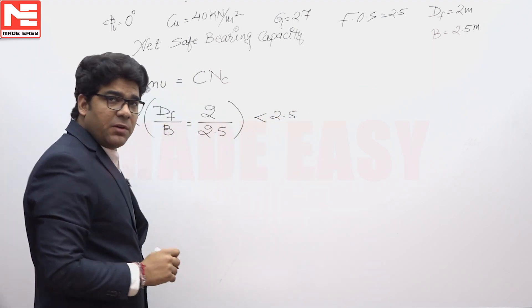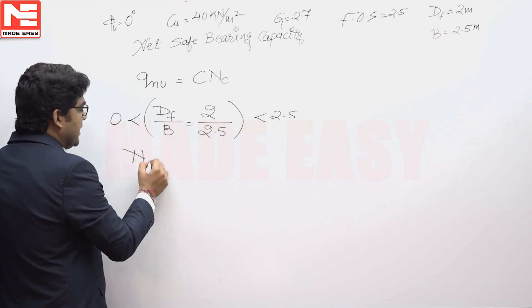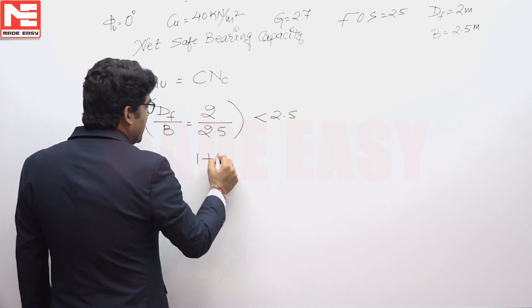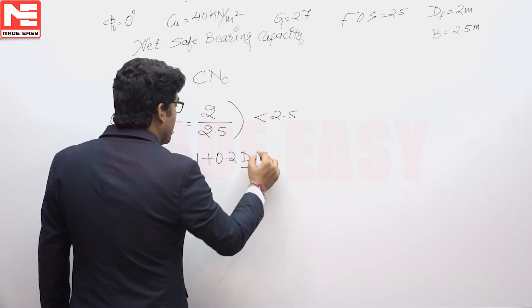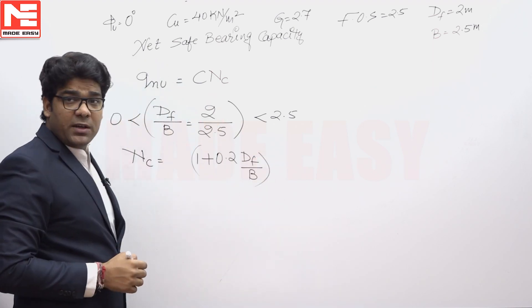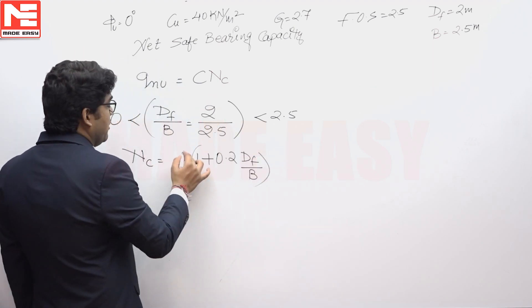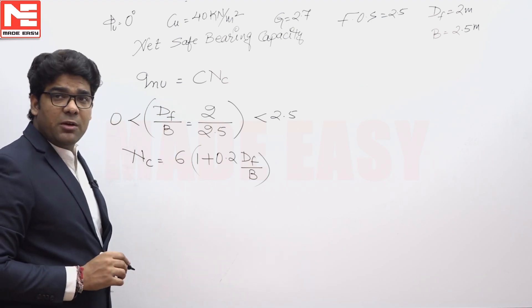If DF by B is in between 0 to 2.5, then NC will be equivalent to 1 plus 0.2 times DF by B. Since a square footing is given, this NC will be equal to 6 times (1 plus 0.2 times DF by B).